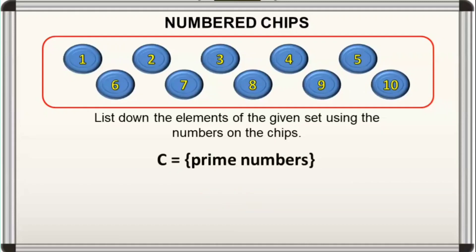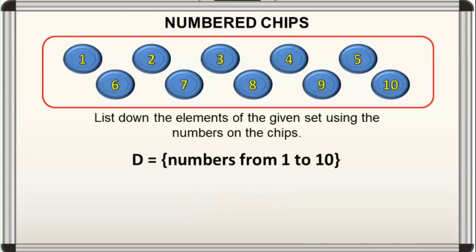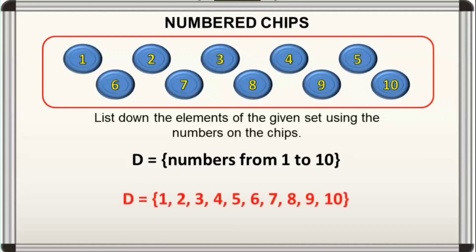For the third set — you got it! The elements of set C are 2, 3, 5, and 7. And for the last set — great! The elements of set D are the counting numbers 1 through 10.